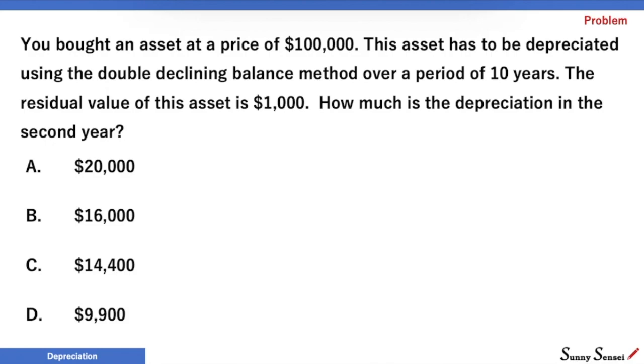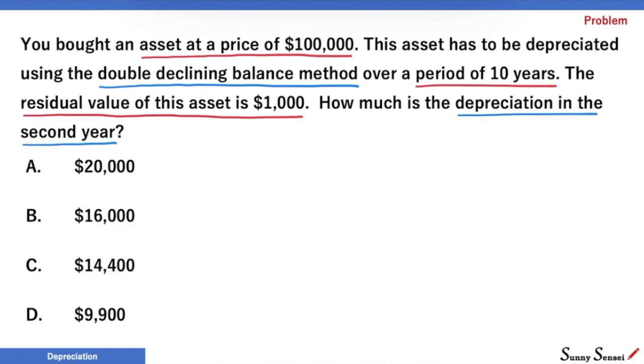Alright, let's start. Asset cost is $100,000. Asset useful life is 10 years. Residual value or salvage value is $1,000. We have to use double declining balance method and find the value of depreciation in second year. 10 years is the useful life. If we depreciate the asset uniformly, we have to depreciate it by 10% every year.